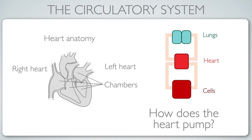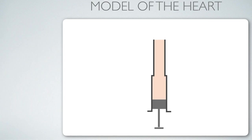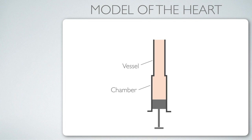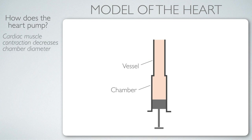We're going to develop an intuition for the mechanics of the heart using a simplified model starting with just one chamber and one major vessel leaving the chamber. The chamber can change its volume via a piston — you can think of it as a syringe connected to a hose. The first part of our answer: cardiac muscle decreases the chamber diameter.